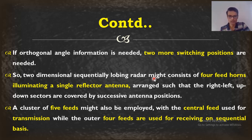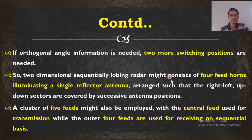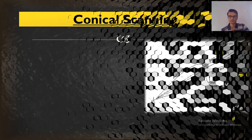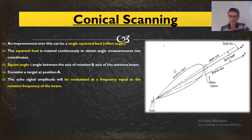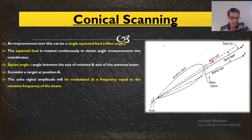Instead of using four or five feed horns, a single feed horn can be rotated in all directions. That method is called conical scanning — a single squinted feed horn is used and rotated in all directions, forming a beam rotation axis. At any particular instant, there is a beam axis and a rotation axis distinct from each other.